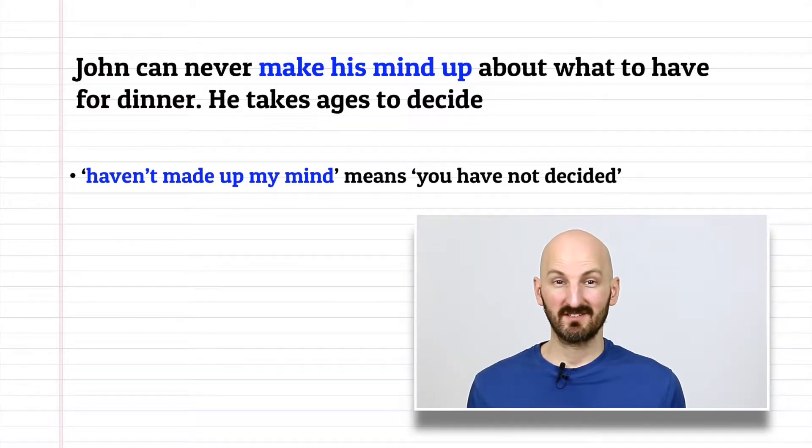I haven't made up my mind yet. This is a simple expression that means you have not decided. It's often used when you have more than one choice and you have to choose. You can change the word order. An example in context is, John can never make his mind up about what to have for dinner, he takes ages to decide.